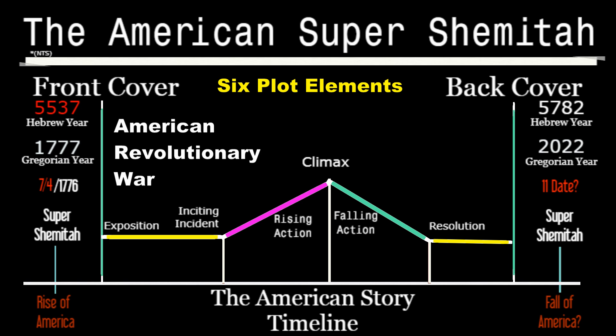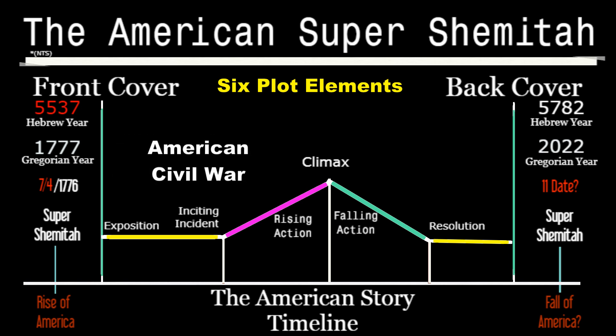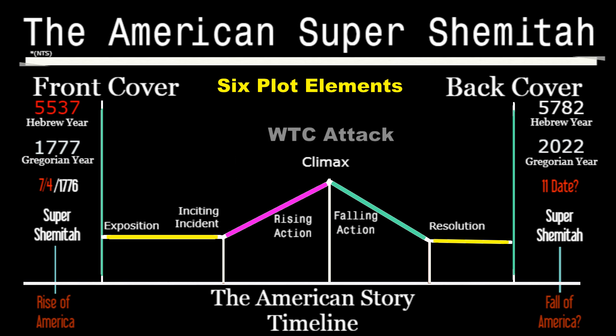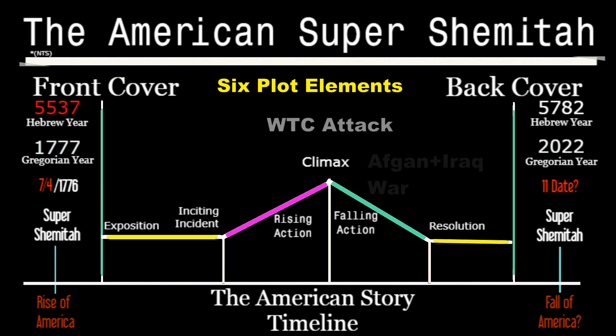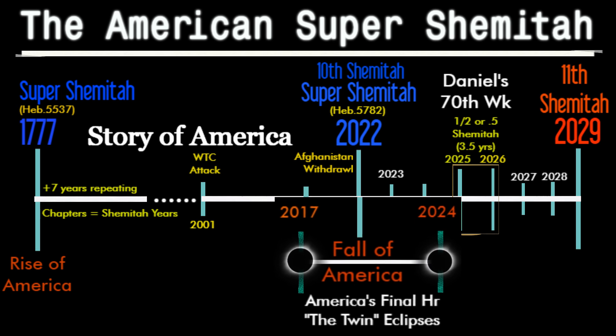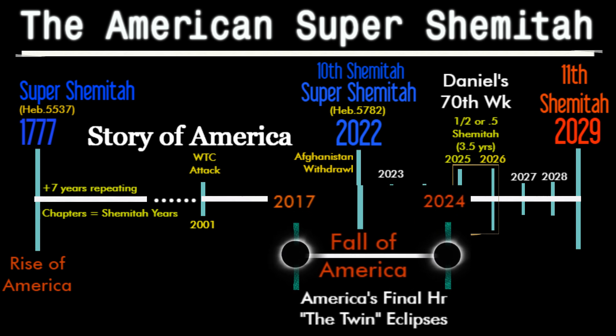The inciting incident is the Civil War of 1861, which is also of the Shemitah year 5621, leading into the rising action of World War One and World War Two. The climax is symbolized by the World Trade Center attack, occurring on the Shemitah year. The falling action covers the Afghanistan and Iraq Wars, and then the Afghanistan withdrawal brings us to the resolution — into the back cover, the fall of America.